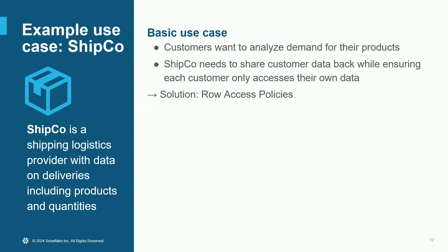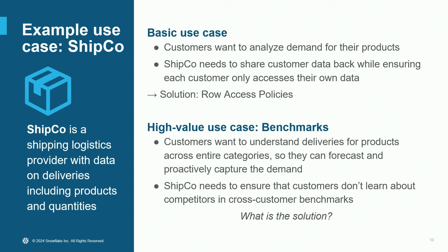However, the full value of the data is not unlocked in the basic use case. ShipCo has delivery records across many customers, and what we can do is unlock more — helping customers understand trends not only for their own products, but across product categories and across customers. This is the benchmarking use case. Instead of customer A getting only their own data, customer A can understand insights and trends across customers A, B, C, D, and so on. However, ShipCo must ensure customers' data is protected, because customer B could be a competitor.